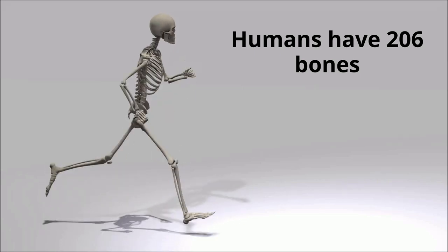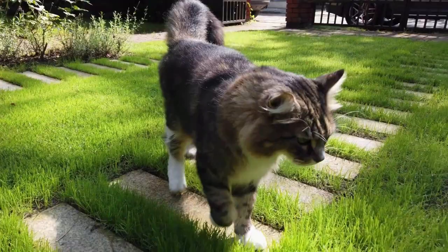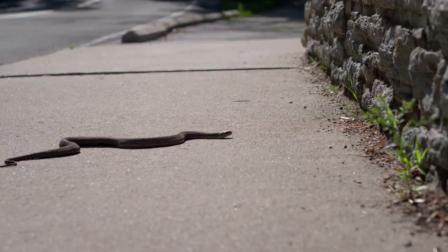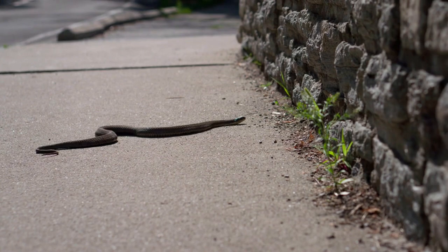Humans have 206 bones in their body. The average cat has 244 bones in its body. Snakes have around 1,800 bones. Can you guess how many bones this insect has?